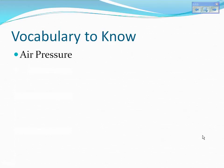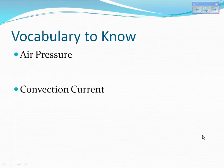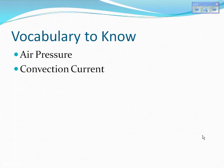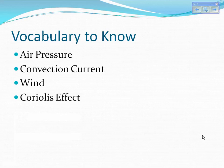The vocabulary that you need to know and be aware of as we go through this video lesson is: air pressure, convection current, wind, Coriolis effect, and global winds. When you see these words and take notes on them in your notebook, make sure you underline these key words.